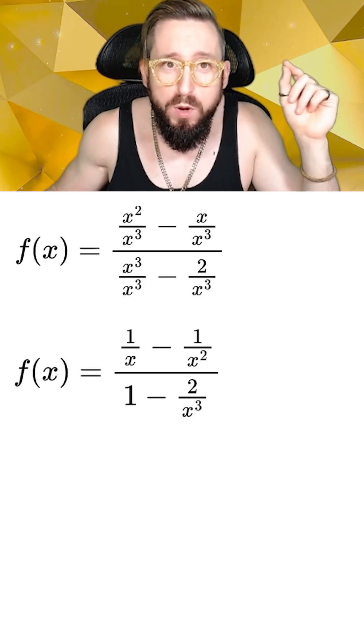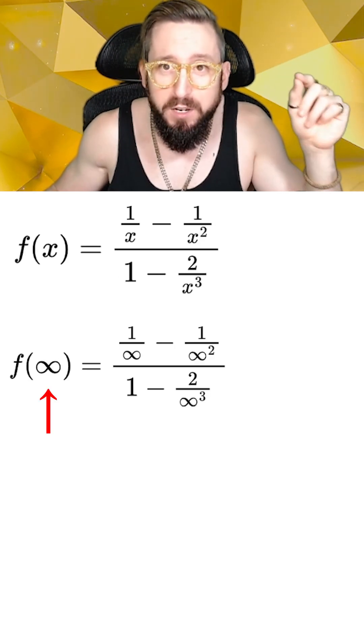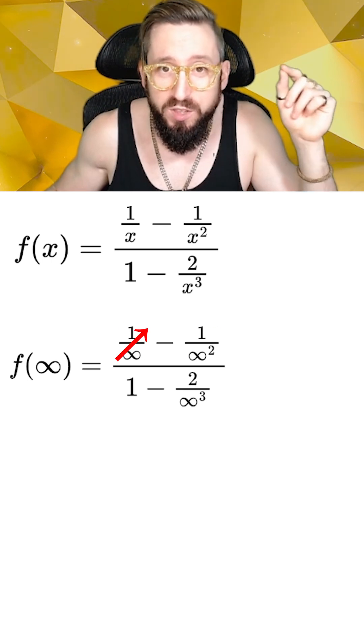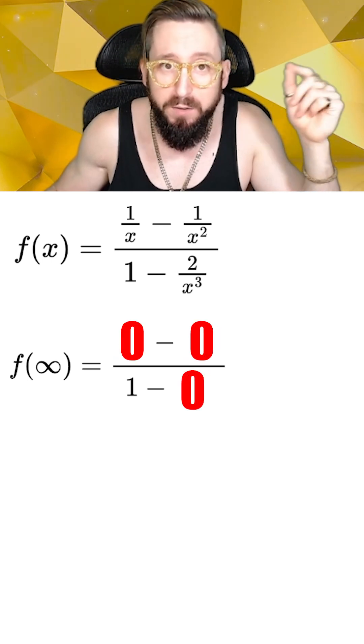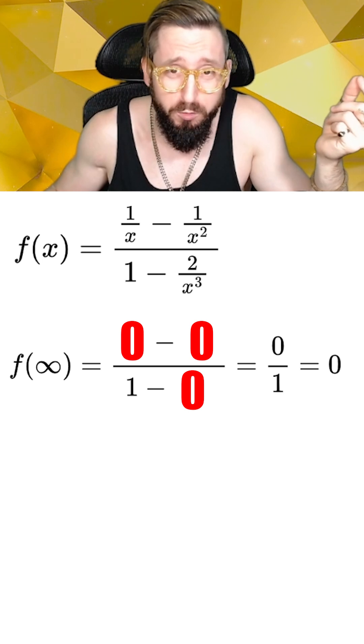After simplifying the fractions a bit, we can now take the limit by plugging in infinity for x and see that a lot of these terms will be zero since they are a number divided by infinity. This eventually gives us zero over one, which is just zero.